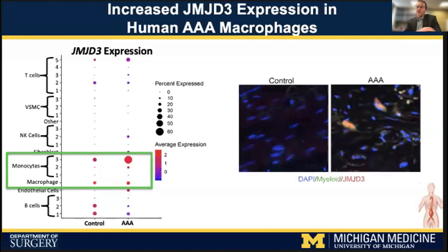Although single-cell sequencing is a useful technique to identify gene expression analysis in different cellular populations, you ultimately have to do confirmatory testing. For our study, we specifically analyzed the histological architecture of the aortic wall, looking at protein expression of JMJD3 within aneurysm walls compared to non-aneurysmal control samples. Shown here is histological staining of the aortic aneurysm with JMJD3 in red and myeloid cells in green. In the control population there's none of that expressed, whereas in the aortic aneurysm there's significant upregulation of myeloid cell and JMJD3 staining, as well as co-localization as noted by the yellow architecture.